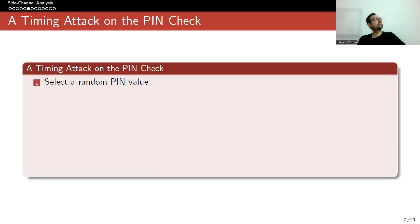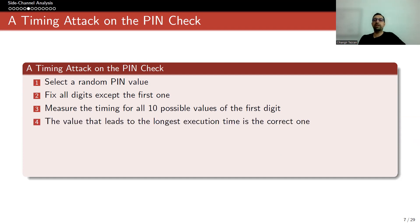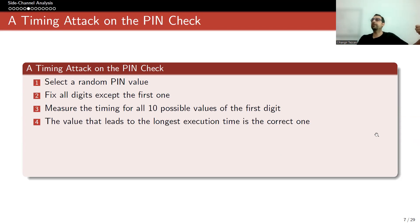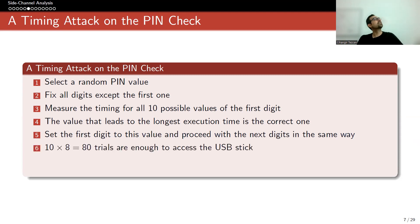A timing attack on this scenario works like this: select a random PIN value, fix all digits except the first one, and measure the timing for all 10 possible values of the first digit. The value that leads to the longest execution time is the correct one, because that value causes the first digit to be correct, so the device proceeds to check the second digit. This way, in 10 trials you get the first digit. Since you know the first digit, fix it, and proceed with the next digits in the same way. Instead of 10 to the 8th, you need to perform 10 times 8, which is 80 trials.